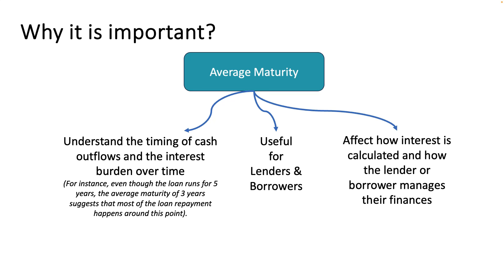Number three, it will also affect how interest is calculated. From the lender's point of view, if the average maturity is very short compared with the total tenor of the loan, then the risk is less, so they can even reduce the rate of interest or tenor premium. From the borrower's perspective, if the average maturity is shorter it means substantial loan is going to be repaid in a short period, so they have to manage their cash flows accordingly.